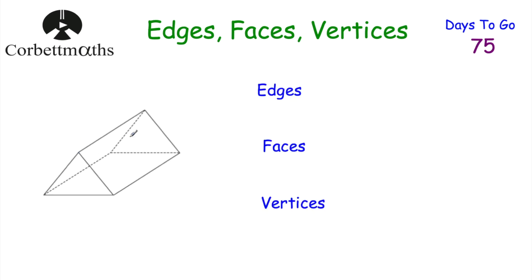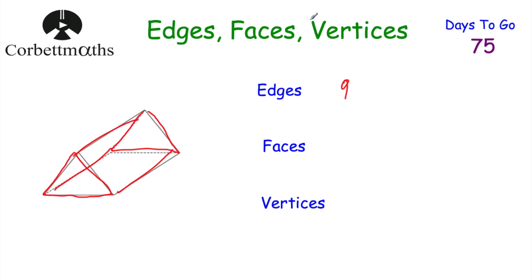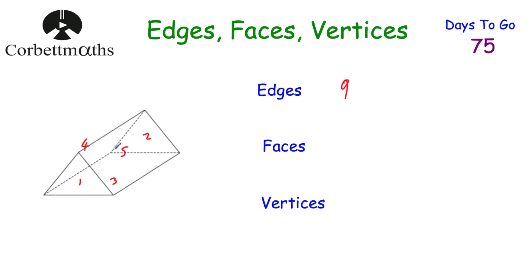Here's a question about a triangular prism — pause the video and write down how many edges, faces, and vertices it has. For edges: three on the front, three on the back, and three going backwards — nine edges in total. For faces: the front triangle, the back triangle, the rectangle on the bottom, and the rectangles on the left and right — five faces in total. For vertices: three on the front and three on the back — six vertices in total.